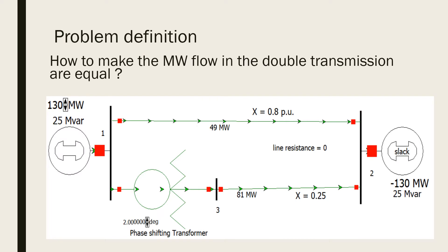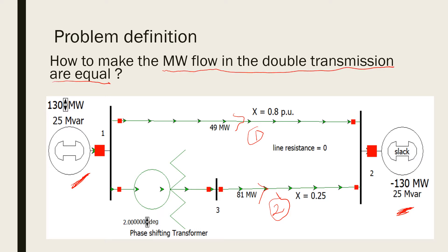Now in this problem we are taking a model. A generator is connected at one end, supplying power to the infinite bus over a double transmission line — transmission line number one and number two. We can observe it is 49 megawatt in transmission line number one and 81 megawatt in transmission line number two. By adjusting the phase shifting transformer, we want to make this power flow equal. This difference happens because the reactance of line number 1 is 0.8 and line number 2 is 0.45.